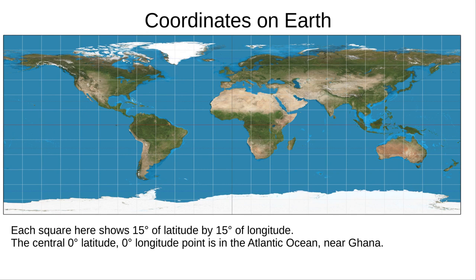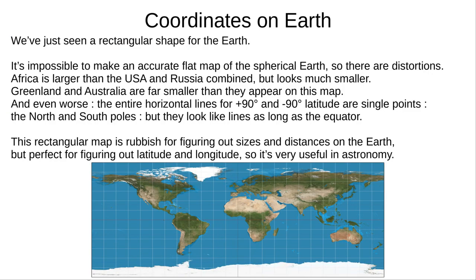Here is a map of the Earth. The lines of latitude and longitude are all parallel, and we can see squares of 15 degrees by 15 degrees. The zero degree, zero degree point is in the Atlantic Ocean, south of Accra in Ghana. But that map's wrong — in fact, all flat maps are wrong, because the Earth isn't flat and it's definitely not a rectangle. Different maps are better for some purposes and worse for others, and this rectangular map shows latitude and longitude very clearly, so it's very useful in astronomy.